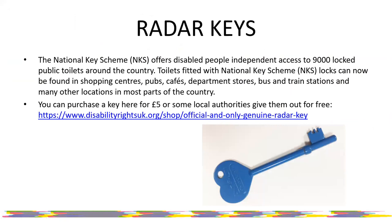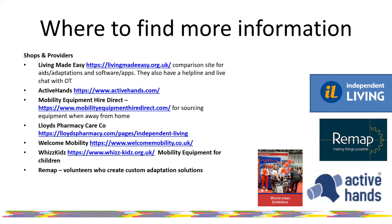Radar keys — a lot of disabled toilets will be locked, and finding someone who has the key can be a nightmare. A lot of them are fitted with the same lock — the National Key Scheme. You can buy radar keys from Disability Rights for £5, or get some for free from local authorities. There's also an app that tells you where your nearest public toilet is that uses these keys, and a paper handbook with all located toilets, also available from Disability Rights.